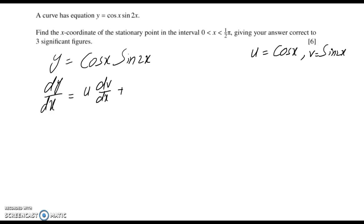Remember the product rule: u dv/dx + v du/dx. The derivative of cos x is -sin x. The derivative of sin 2x is cos 2x, and when we differentiate the angle we get 2, so it's 2 cos 2x.